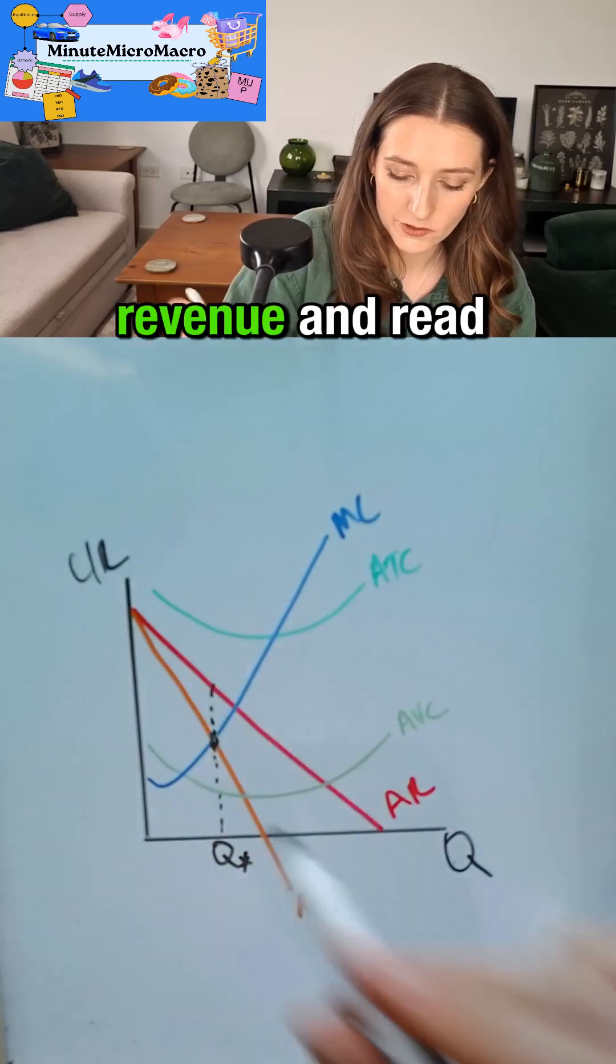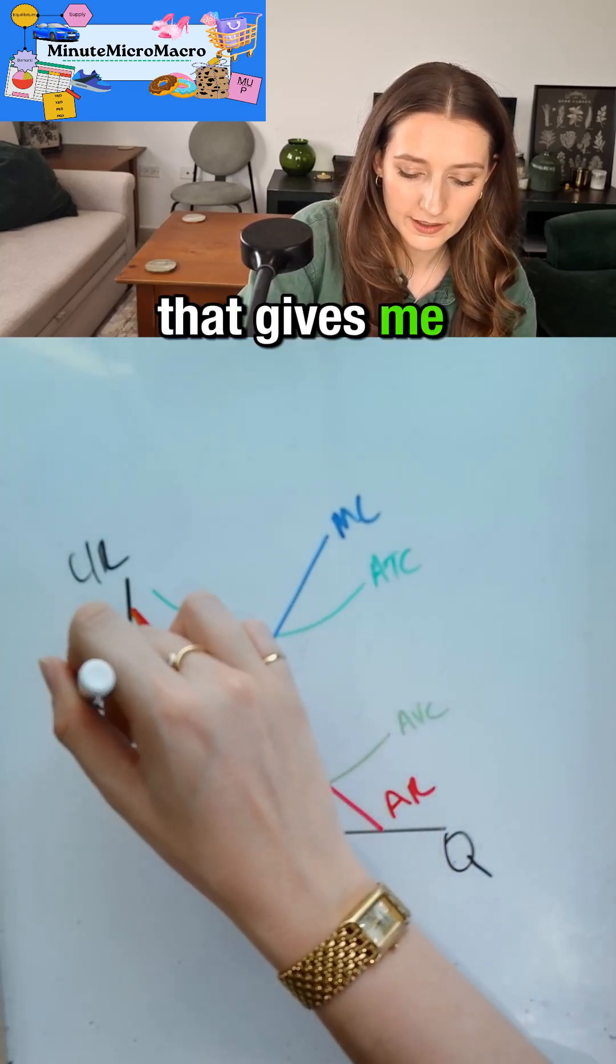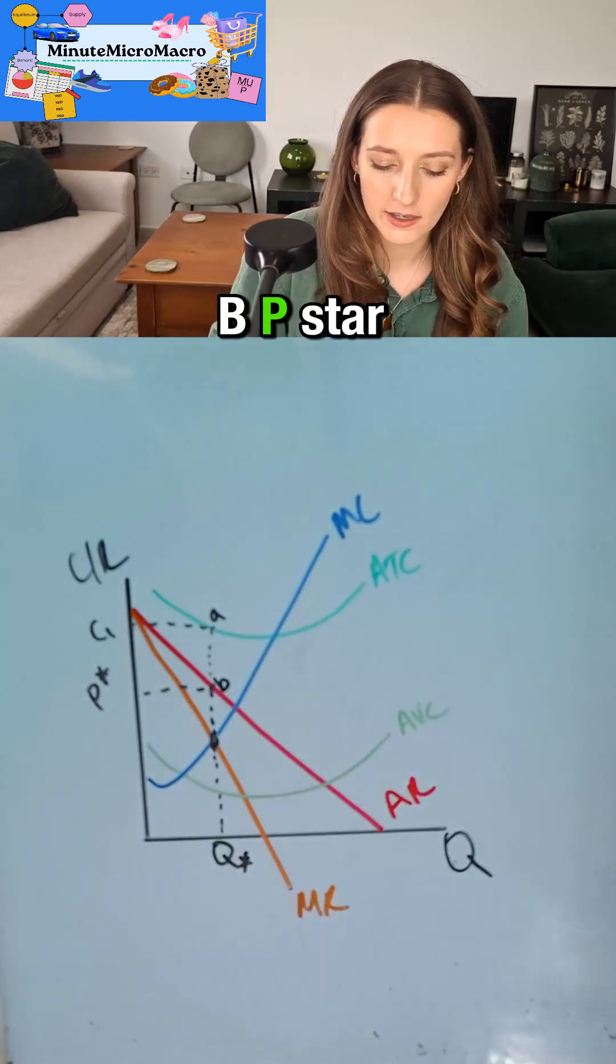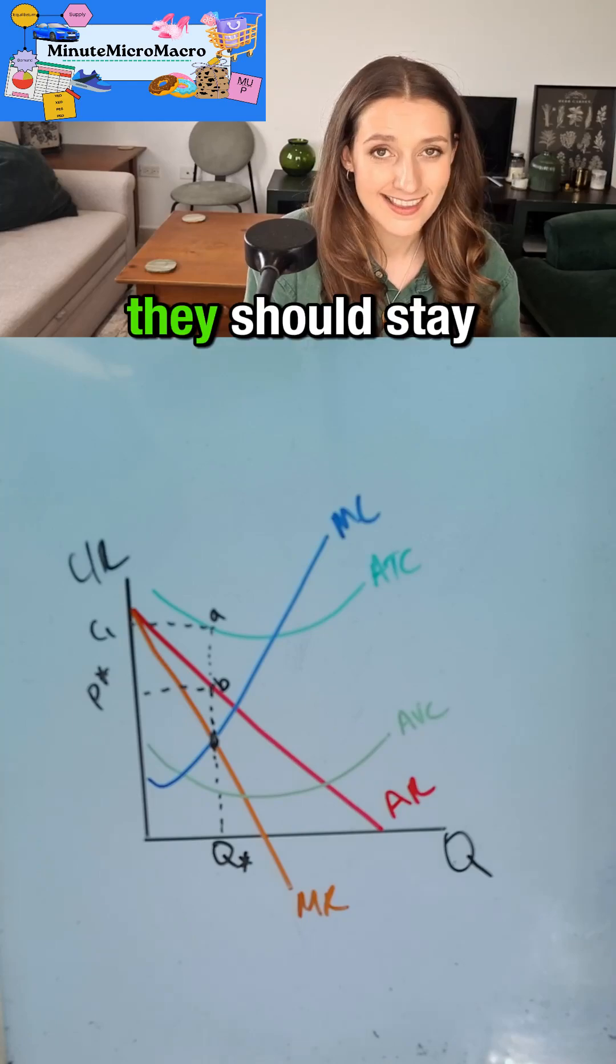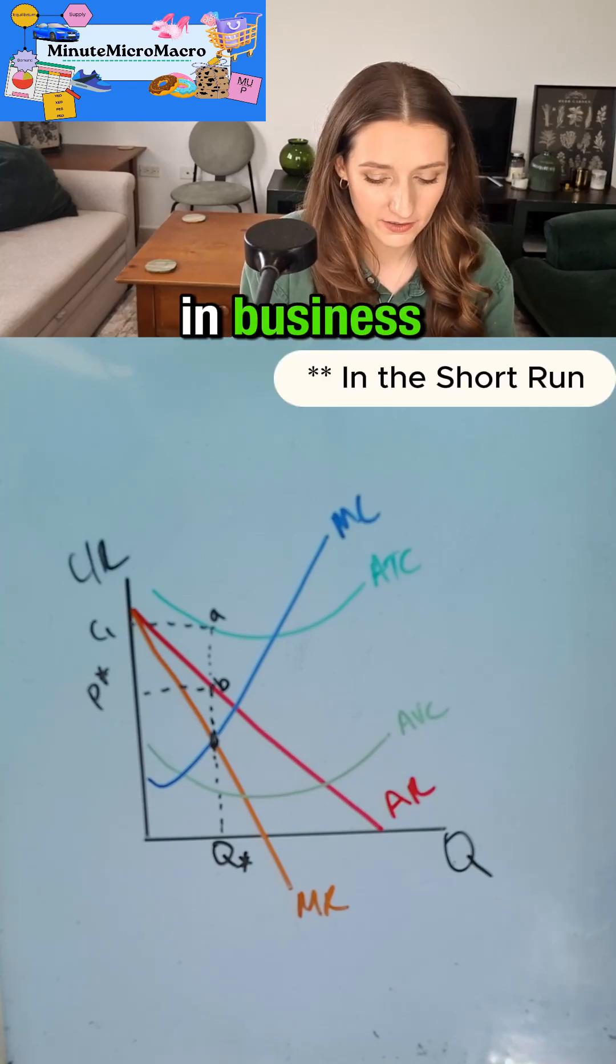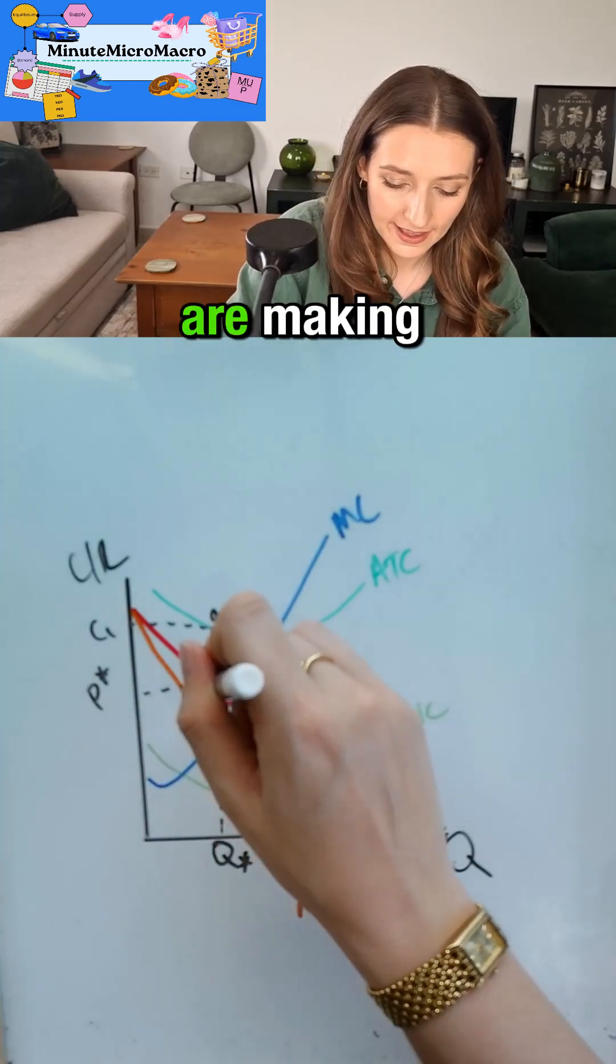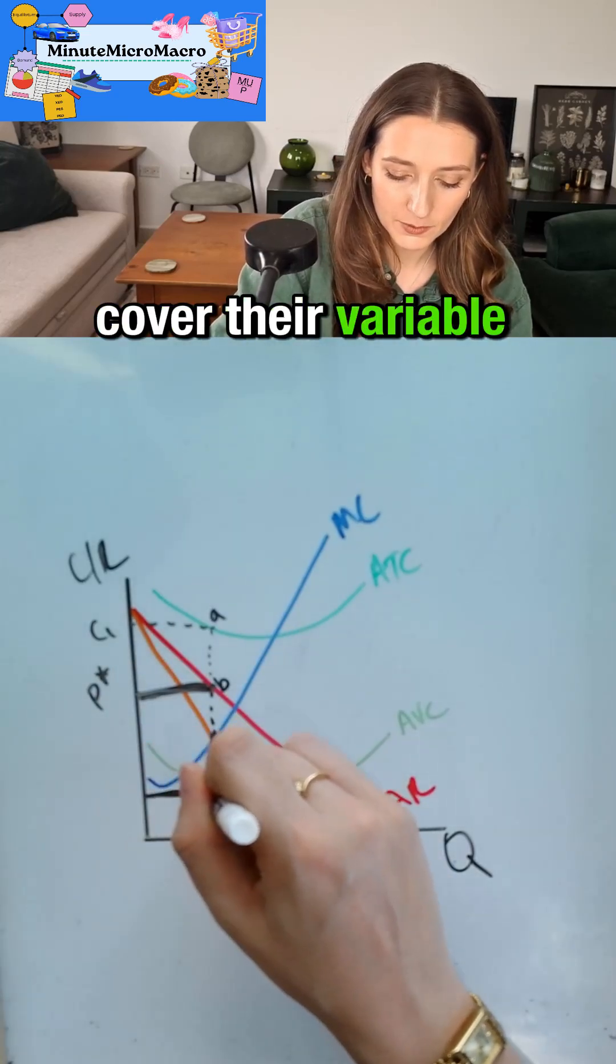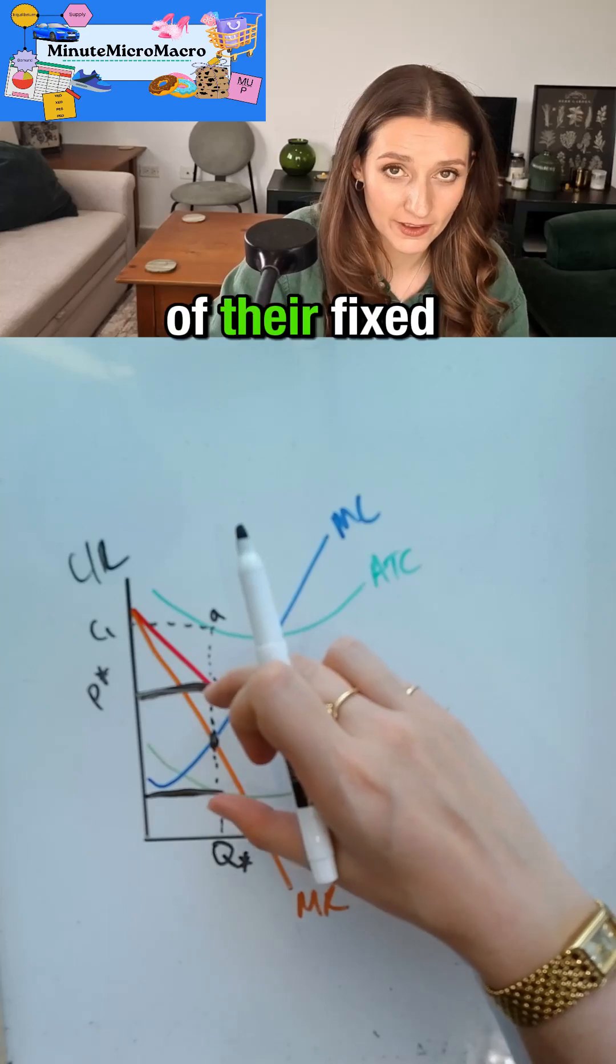If I go up to my average revenue and read across that gives me the price at P star. They're making a loss of C1ABP star. However, they should stay in business. The reason being is that they are making enough money to cover their variable costs and then some of their fixed costs.